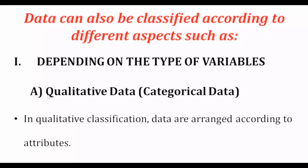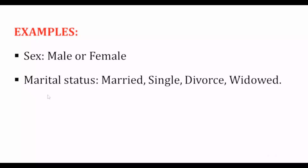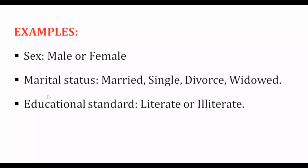Qualitative data includes attributes like marital status: single, married, divorced. Another example is gender — male or female. These are categorical or qualitative variables based on the attributes of the individual.